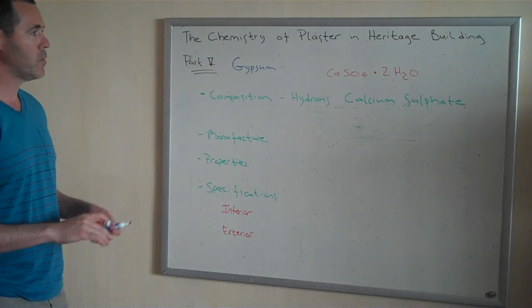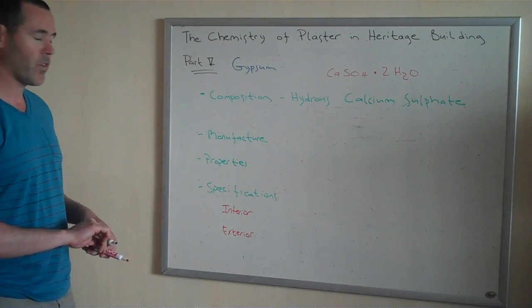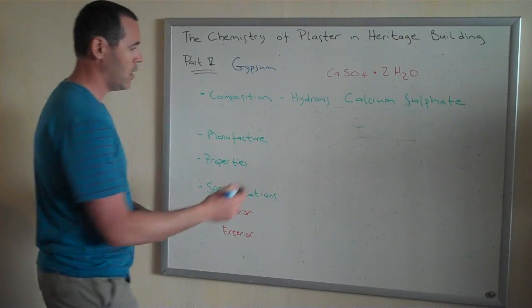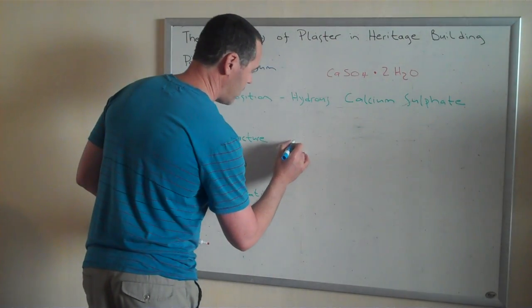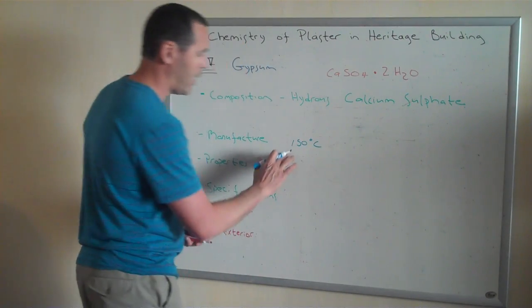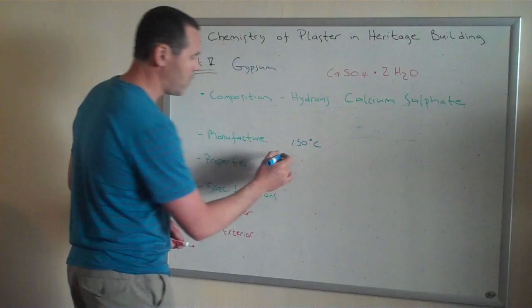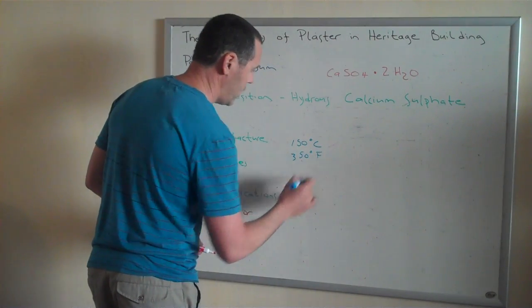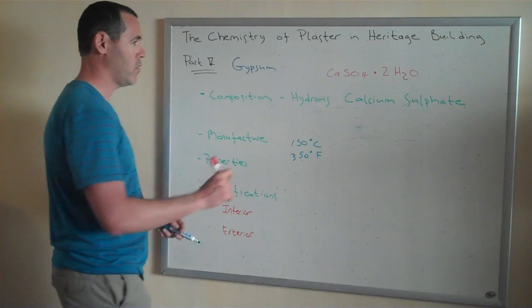Well, in the manufacturing process, there's a couple degrees to which you can cook gypsum. What we commonly understand to be Plaster of Paris is cooked at a relatively low temperature, 150 degrees Celsius or 350 degrees Fahrenheit. And that produces basically the reverse of this formula.